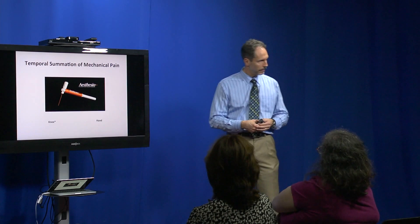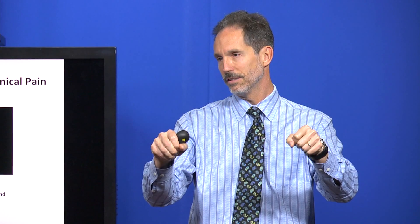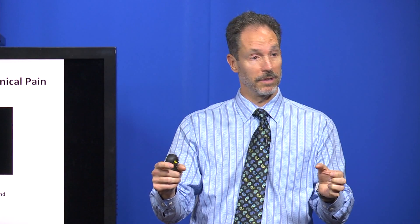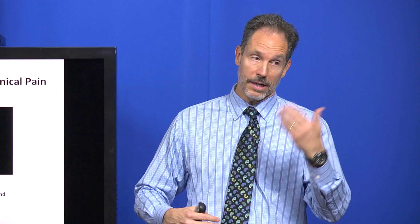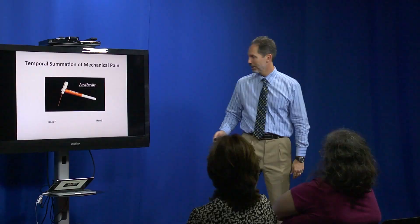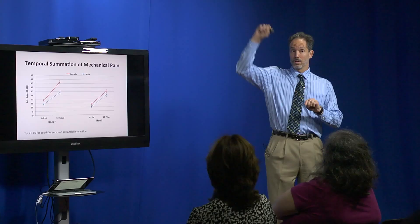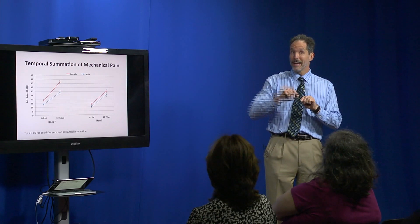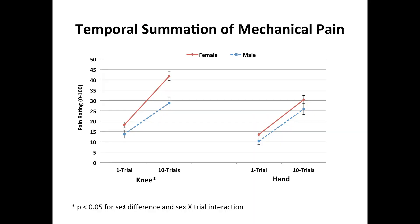You can experience temporal summation yourself if you get into your car on a hot summer day, put your hand on the steering wheel, and just leave it there—it feels hotter and more painful, not because the wheel is getting hotter, but because your body is processing that information differently to warn you to move your hand. This temporal summation is a healthy response. At the knee, women not only provide higher pain ratings, but show a greater increase going from 1 to 10 pokes, suggesting greater temporal summation of pain.